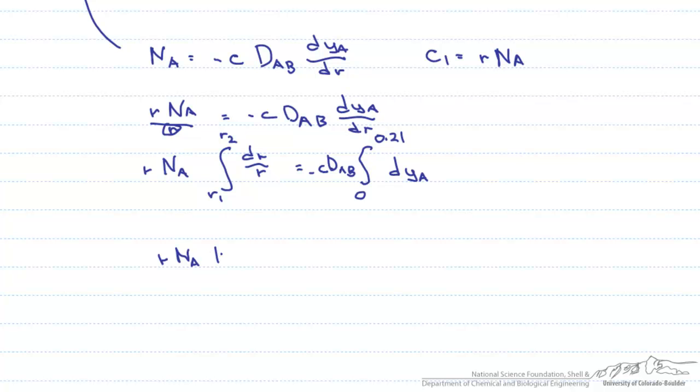Now we have an integral on both sides that we can solve. When we do, we come out with R times this flux, the natural log of R2 divided by R1, equals minus concentration times the diffusion coefficient times 0.21 minus 0.